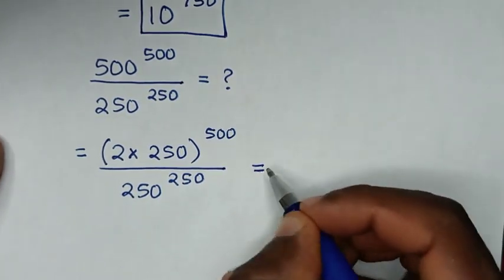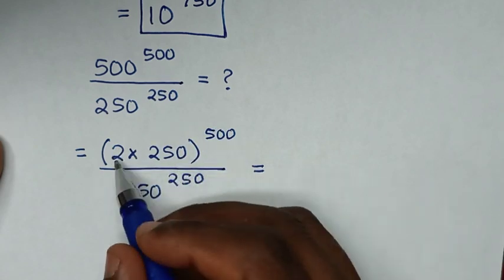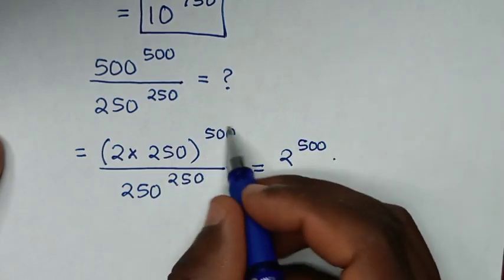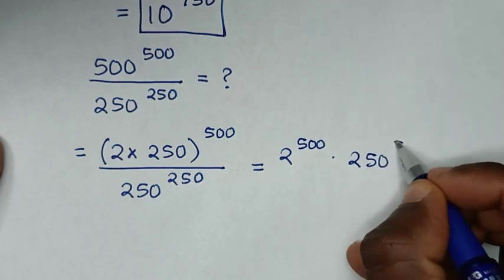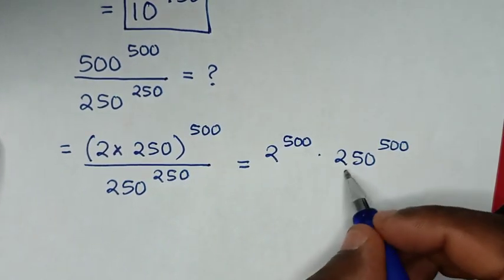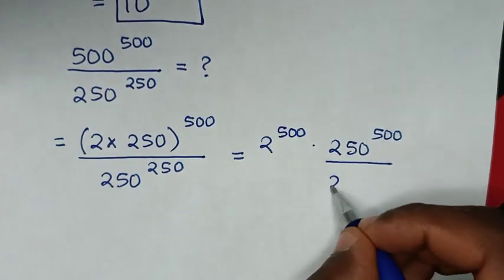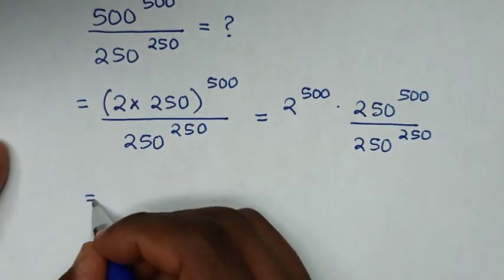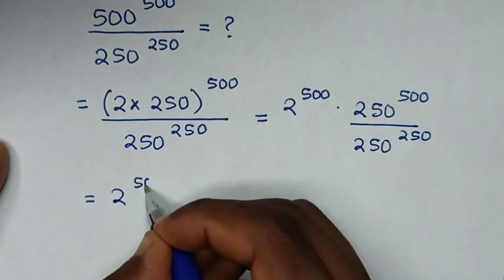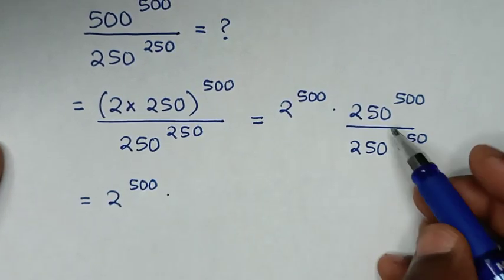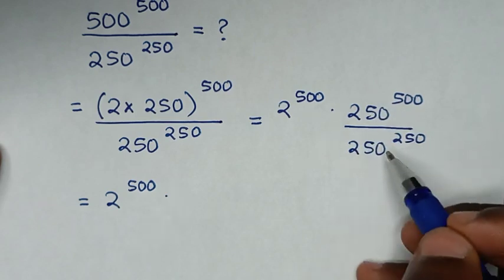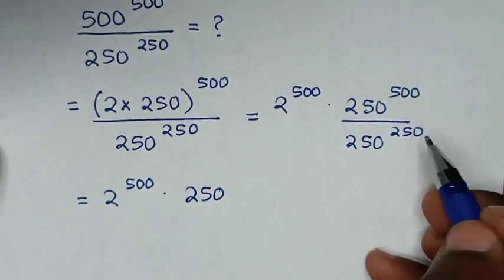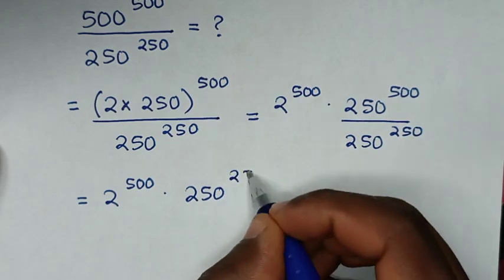Then, taking the power inside the bracket, it will be 2 power of 500, then times 250 power of 500. We then divide by the denominator, which is 250 power of 250. Here is division of exponents with the same base, so it will be the same base of 250, and we subtract the powers: 500 minus 250 is 250.